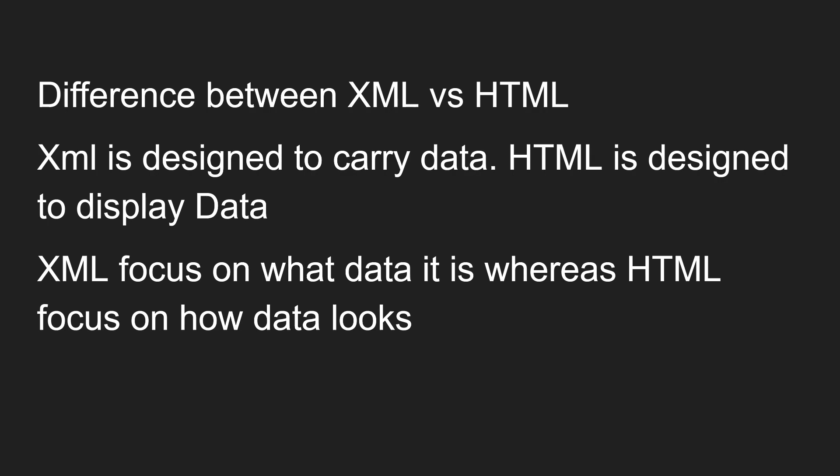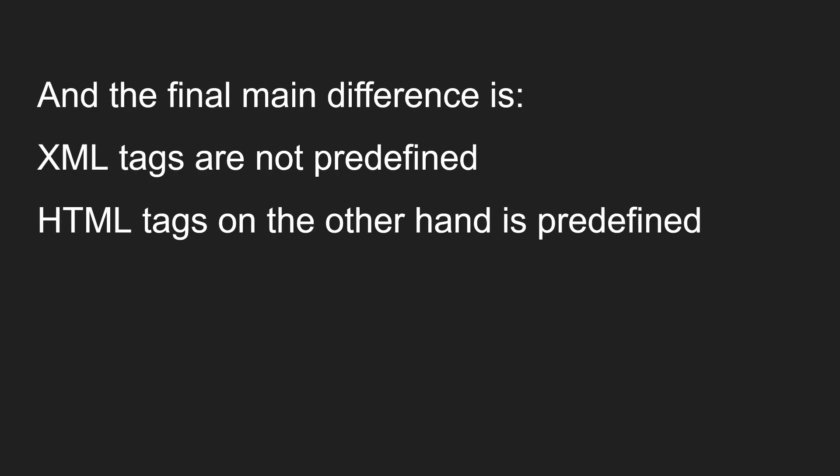XML is a markup language and HTML is also a hypertext markup language. What is the difference between XML and HTML? XML is designed to carry the data, whereas HTML is designed to display the data. XML focuses on what the data is, whereas HTML focuses on how the data looks. The final main difference is that XML tags are not predefined, whereas HTML tags are predefined.